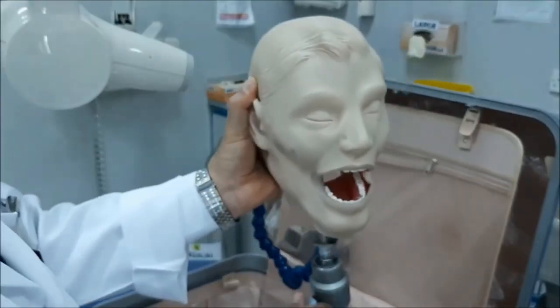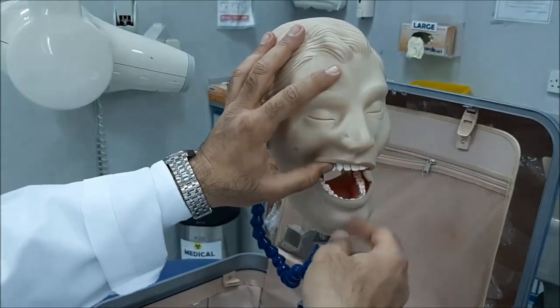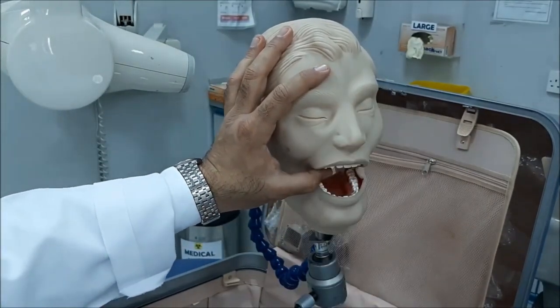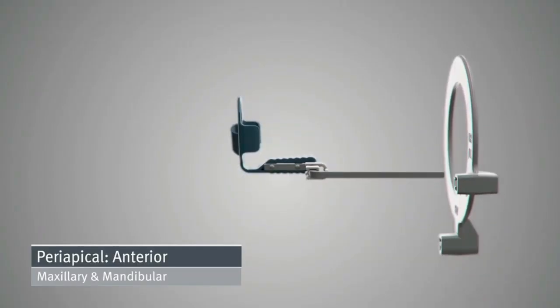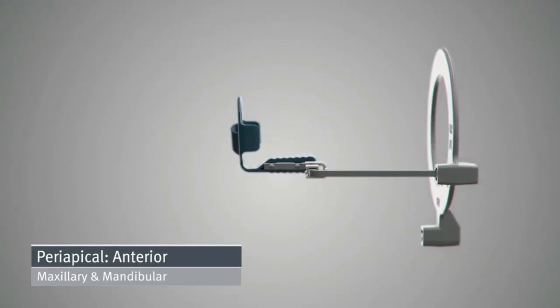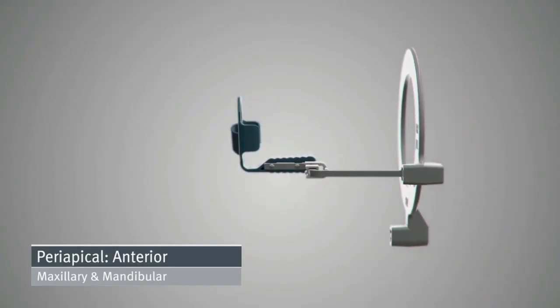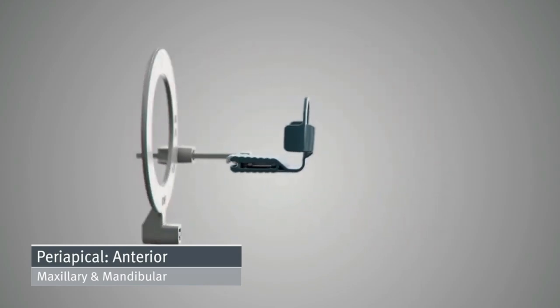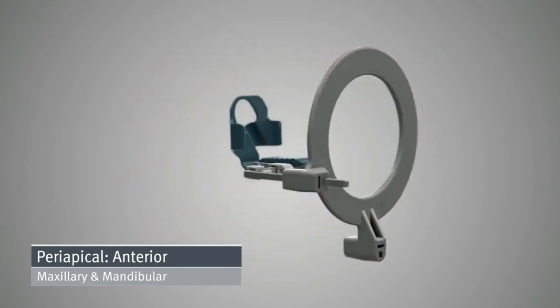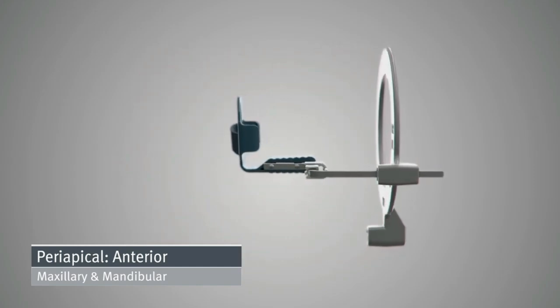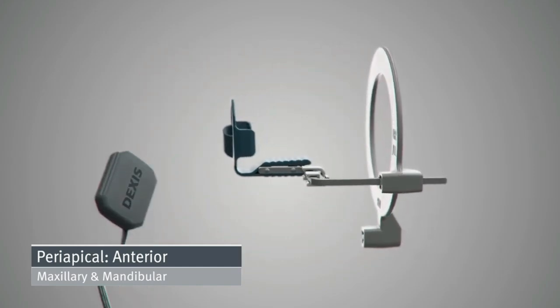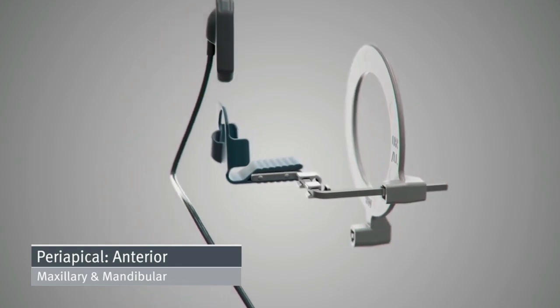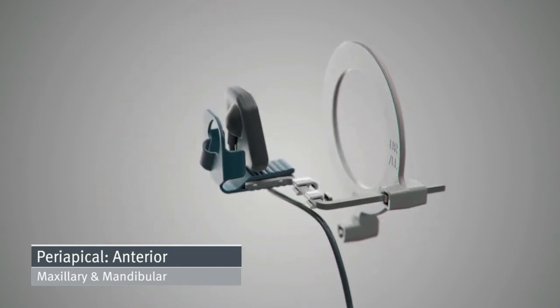The third technique is occlusal X-ray. Occlusal X-rays are designed to capture what goes on inside the roof or floor of the mouth, which helps the dentist see full tooth development and placement. This may be used to find out why teeth haven't erupted yet, or to spot supernumerary or extra teeth which can damage healthy permanent teeth. This type of X-ray may also be used to diagnose a cleft palate or fracture, hard-to-find cysts, abscesses, or growths.